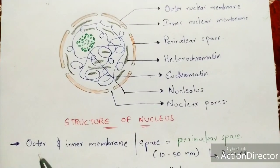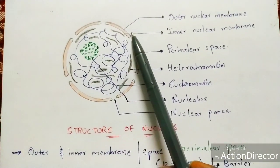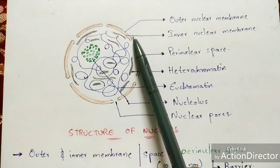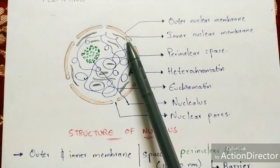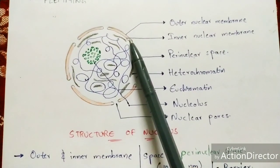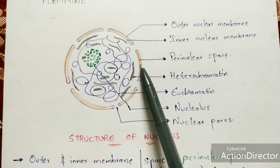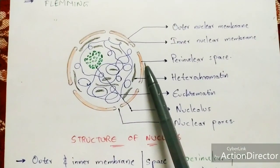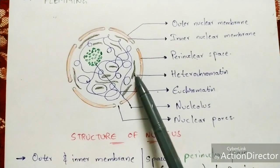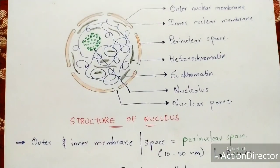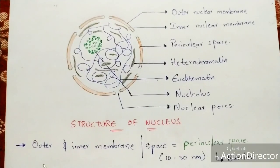Coming to the first parts: the outer and inner membrane. There is a space present between the outer and inner nuclear membrane, and that space is called the perinuclear space. This perinuclear space acts as a barrier for the nucleus.